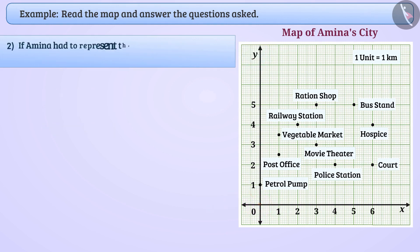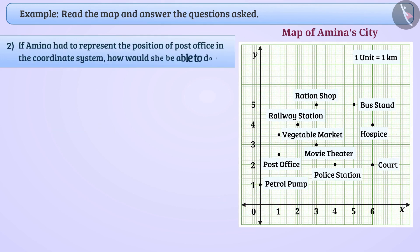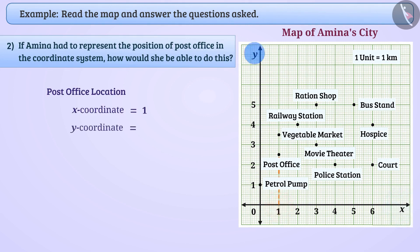If Amina had to represent the position of the post office in the coordinate system, how would she be able to do this? The location of the post office can be represented by x-coordinate 1 and y-coordinate 2.5. Hence, the position of the post office will be represented by (1, 2.5).